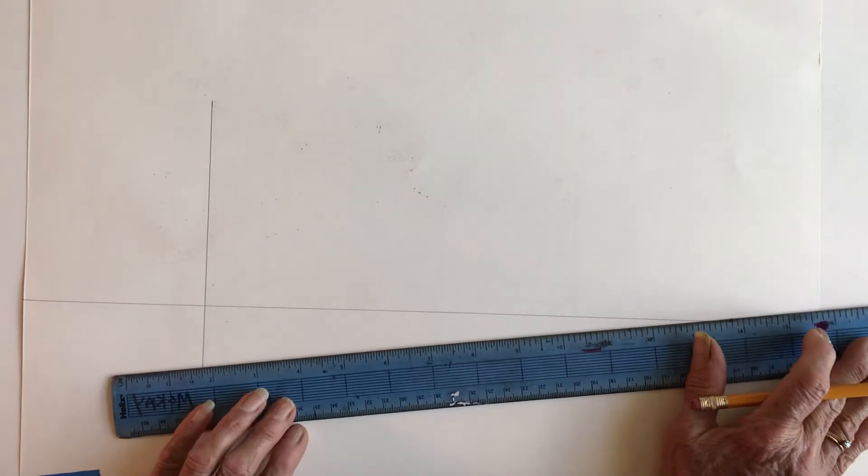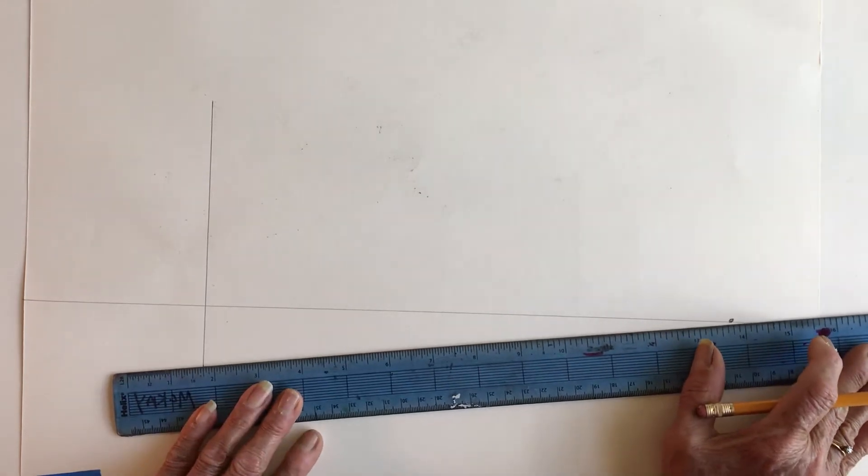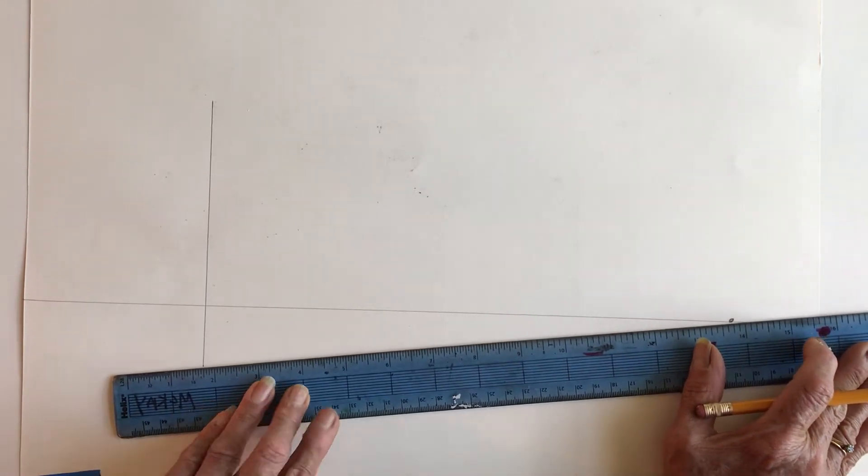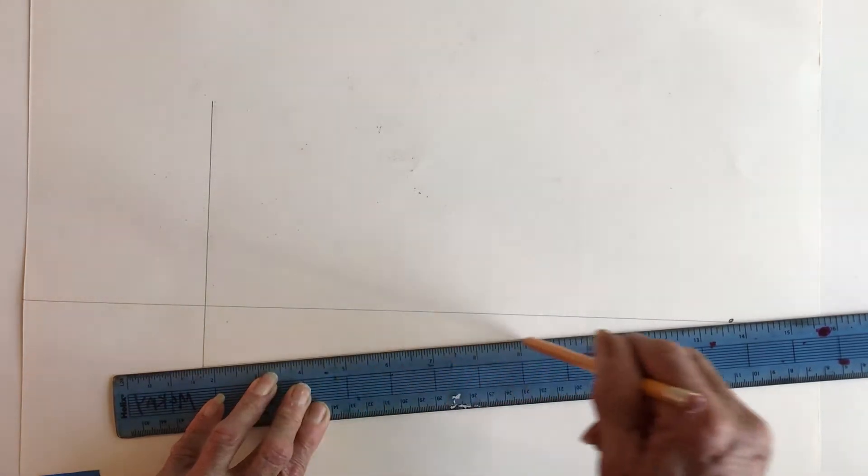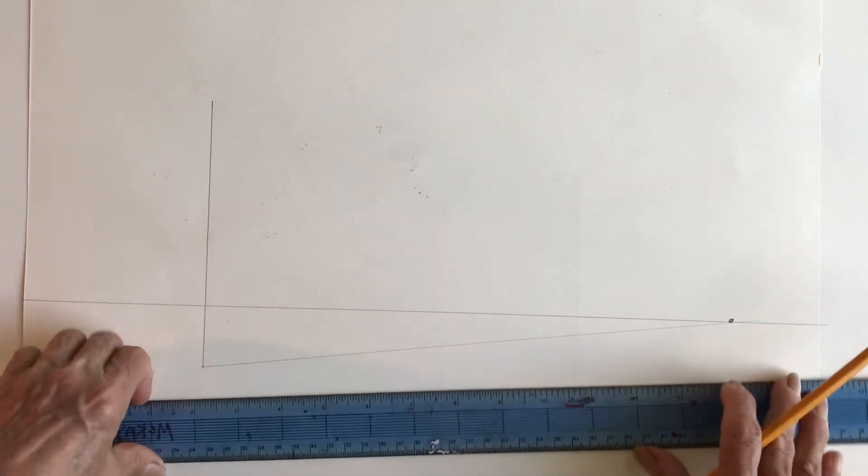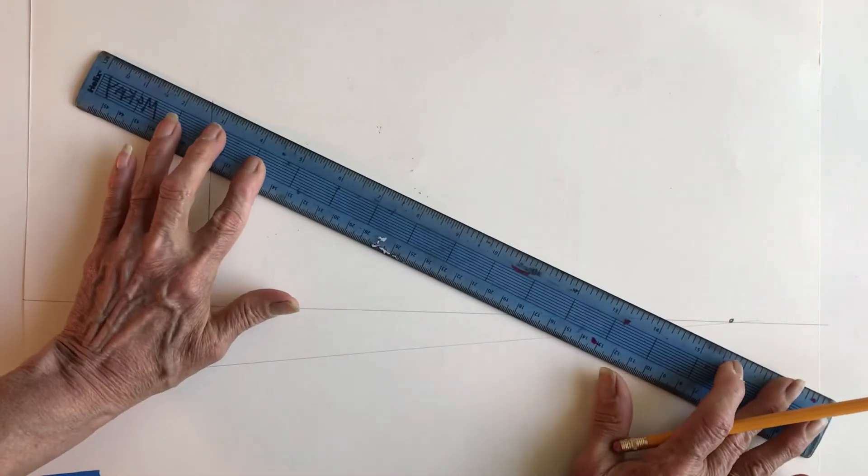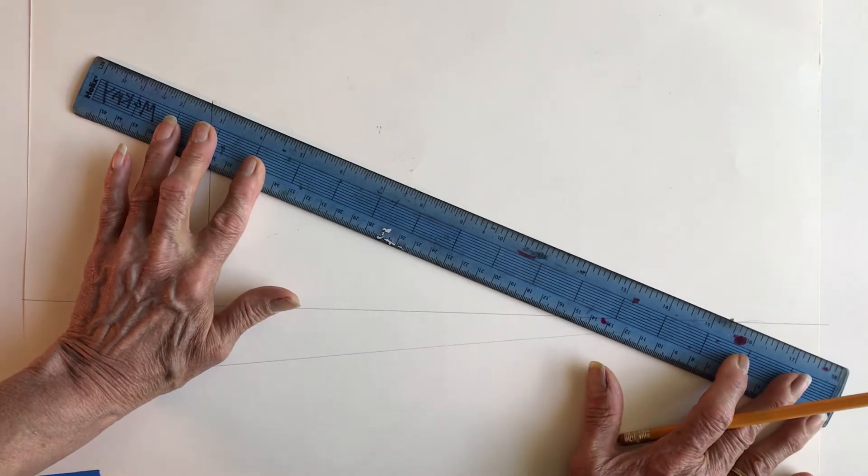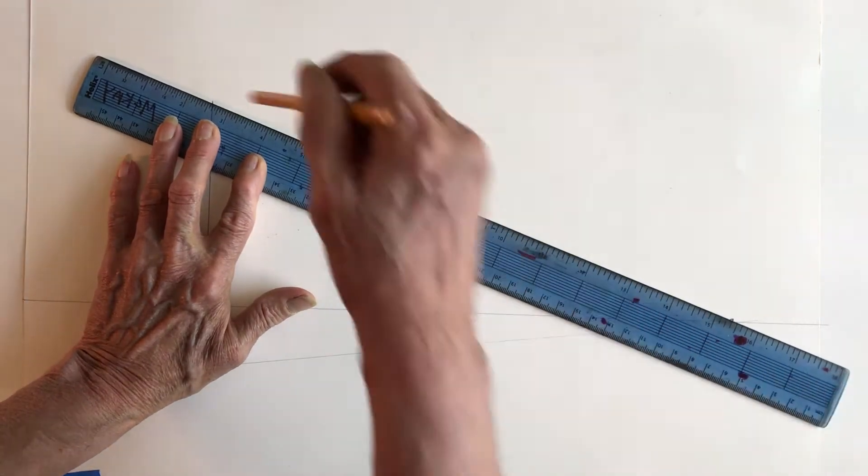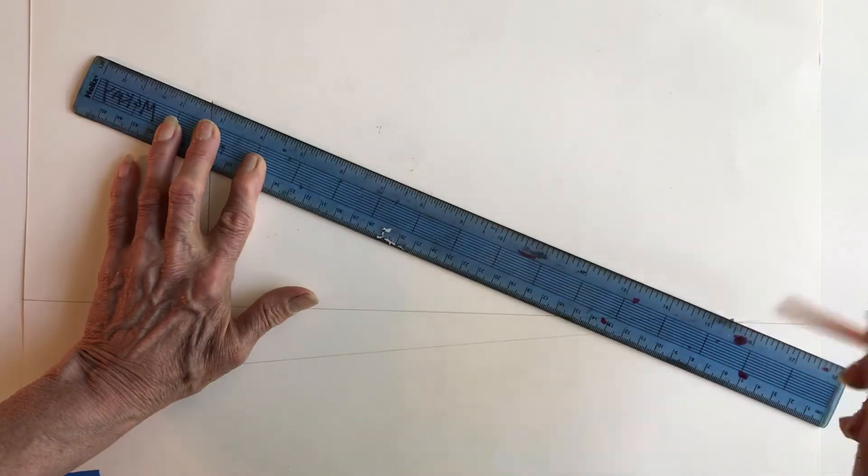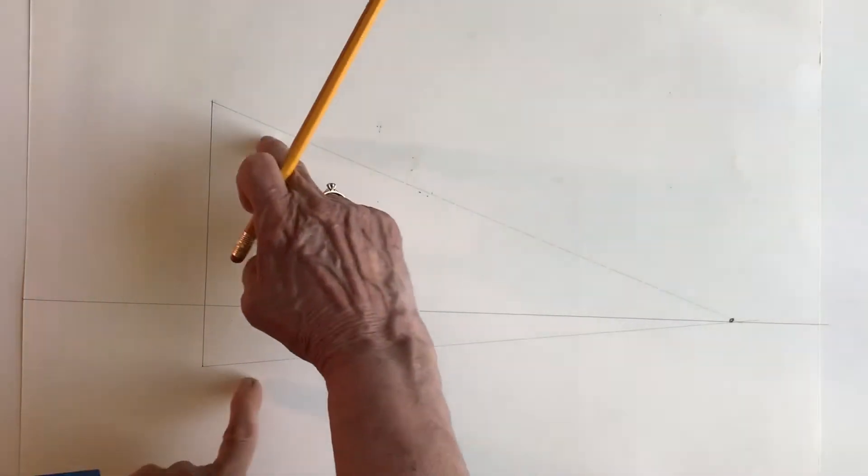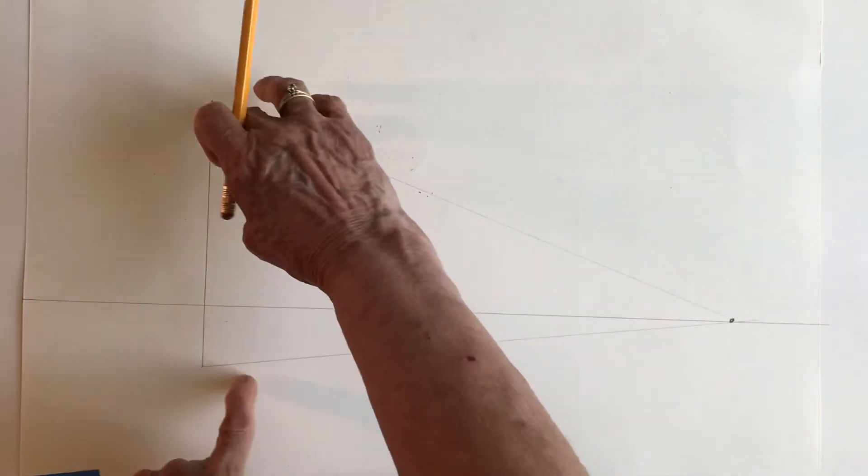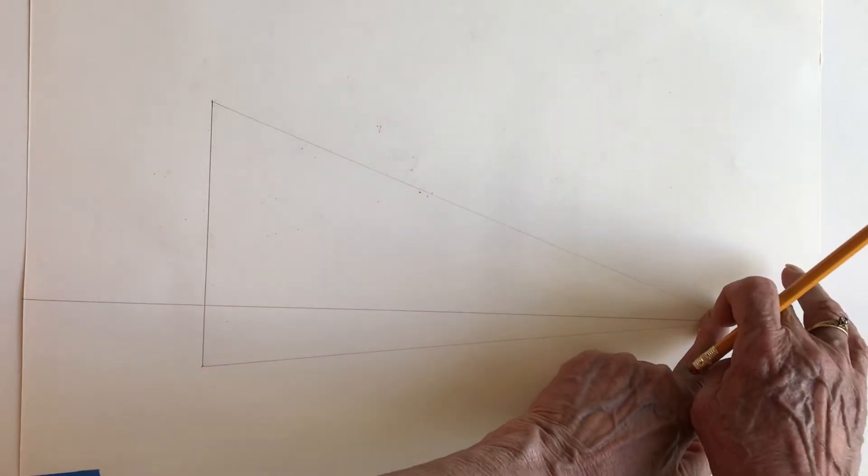And the next thing I'm going to do is I'm going to go from the bottom of the fence post to the vanishing point. From the top, I'm going to do the same thing and that's giving me my construction lines or my lines of recession because these lines are receding back to the vanishing point.